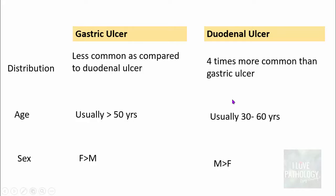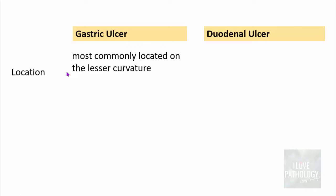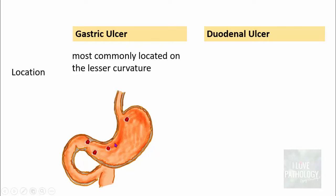The most common location of gastric ulcer is on the lesser curvature. Gastric ulcers are categorized into different types. Type 1 ulcer is present on the lesser curvature. Type 2 ulcer affects both the duodenal mucosa and gastric mucosa. Pre-pyloric ulcers are type 3, whereas ulcers in the cardiac region are type 4. The most common is type 1, on the lesser curvature.